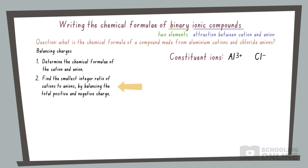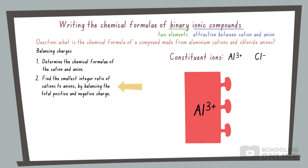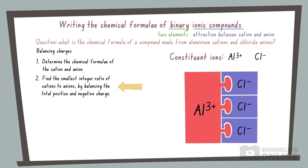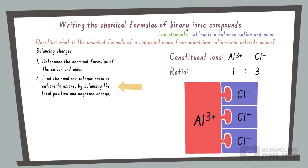Going back to our example, the aluminium ion has a charge of 3 plus, so we draw a long puzzle piece with three tabs. In contrast, the chloride ion has a charge of 1 minus, so we draw a short puzzle piece with one slot. To complete the puzzle, we need three chloride ions to interlock with one aluminium ion. Therefore, aluminium and chloride bond in a 1 to 3 ratio.